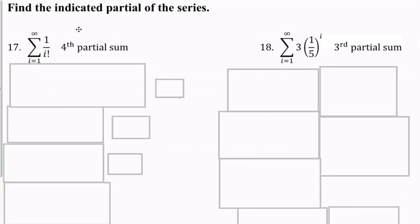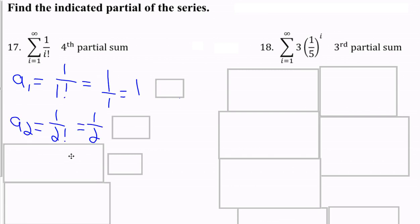So, what we're going to do is we're going to find partial sum. What this means is they're going to give us a term that goes to infinity, but we're only going to find the first n terms. In this case, the first 4. So, first off, I'm going to plug in 1. 1 over 1 factorial, 1 over 1 is 1. That's the first term. Second term, 1 over 2 factorial.